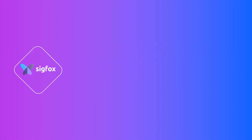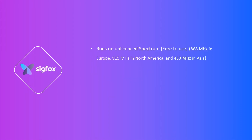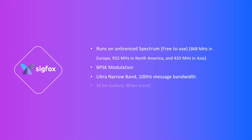Next is Sigfox. It also runs on unlicensed spectrum. It uses BPSK modulation with an ultra-narrow band — only 100 Hz message bandwidth is allowed. To reduce power consumption, each base station or gateway covers 10 km in urban areas and 40 km in sub-urban areas. It only allows 140 upload messages and 4 download messages per day.